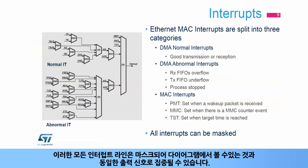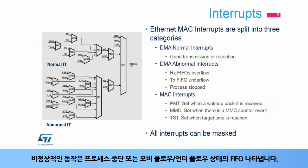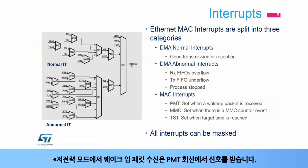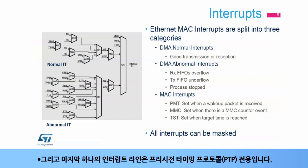The Ethernet MAC peripheral supports various interrupts. All these interrupt lines can be masked and converged to the same output signal, as shown on the diagram. For transmission and reception interrupts, a distinction is made between normal and abnormal operations. Abnormal operations refer to processes aborted or FIFOs in overflow or underflow state. Special MAC features have their own interrupts. In low-power mode, wake-up packet reception is signaled on the PMT line. Any update of MMC counters can trigger an interrupt too, and an interrupt line is dedicated to the precision timing protocol.